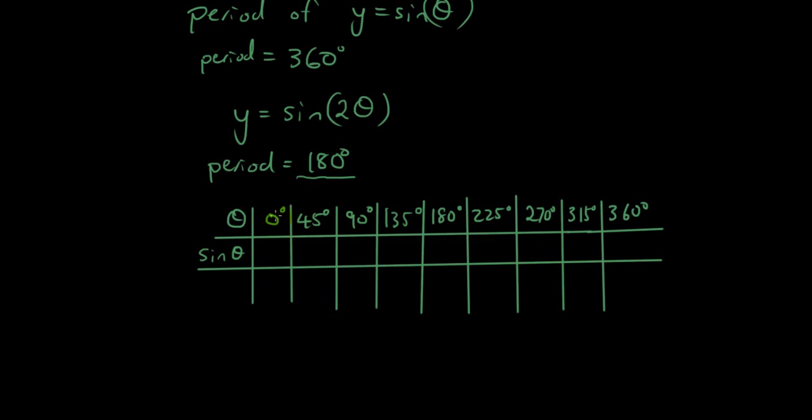So based on what theta is, I'm going to put that into the sine function. So sine 0 is 0, sine 90 is 1, 180 is 0, 270 is negative 1, 360 is back to 0 again. So that was the original curve.